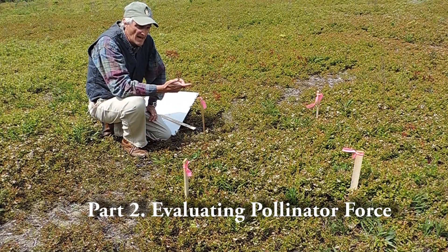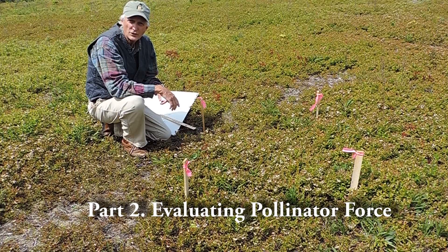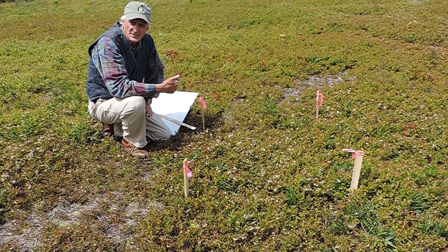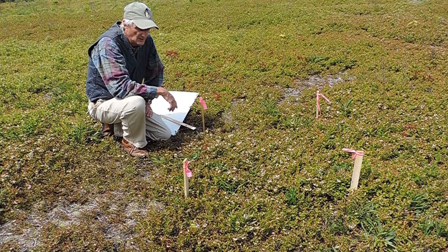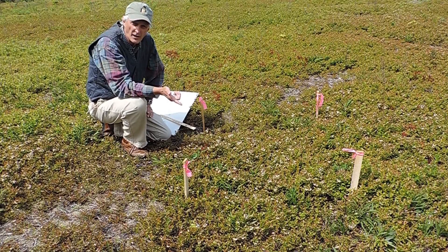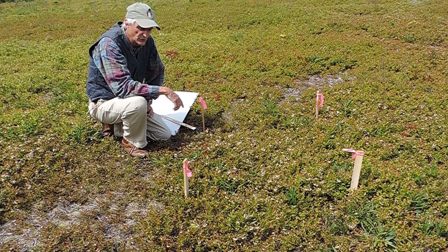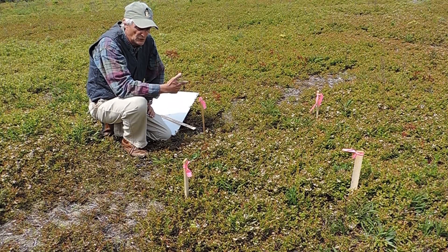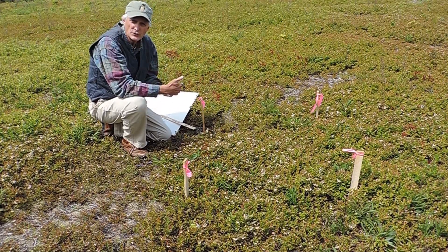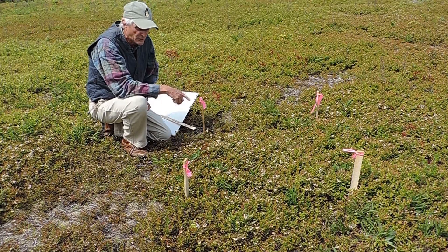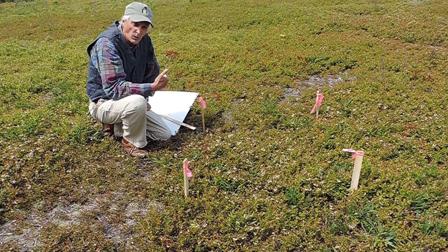I'm back again and what we're going to be doing now is learning how to evaluate the foraging force of bees in your field and relate that to the expected fruit set you might get. What we found from previous research is that if you count the number of bees per square yard for a minute and sample at least 10 one-square-yard quadrats, you should get a fairly reliable estimate of your pollinator force. You need to count both the numbers of honeybees and native bees because their efficiency in pollination is quite different.